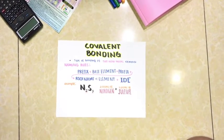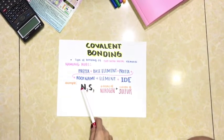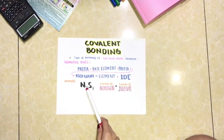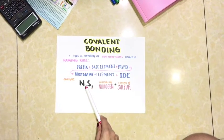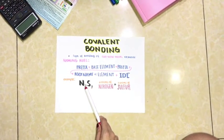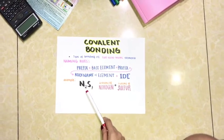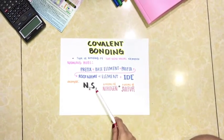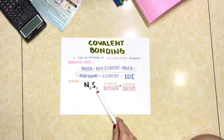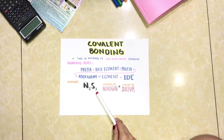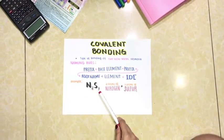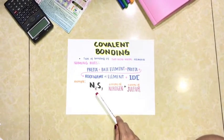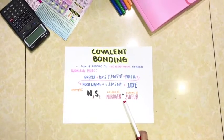For example, N represents nitrogen with a subscript of 2, and S represents sulfur with a subscript of 3. After we do the crisscrossing, we should have 2 atoms of nitrogen and 3 atoms of sulfur.